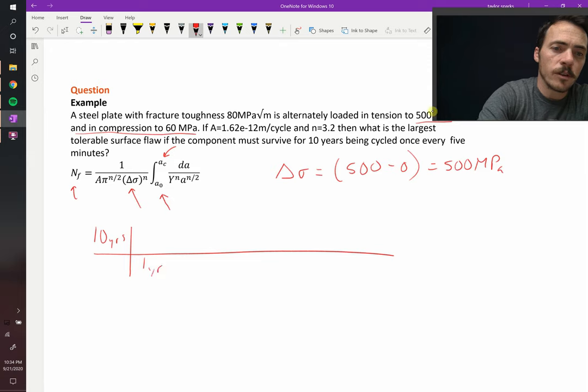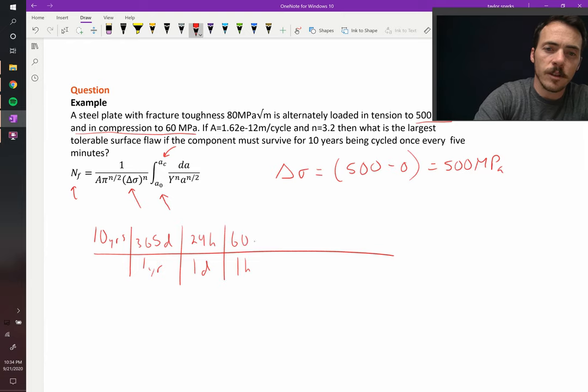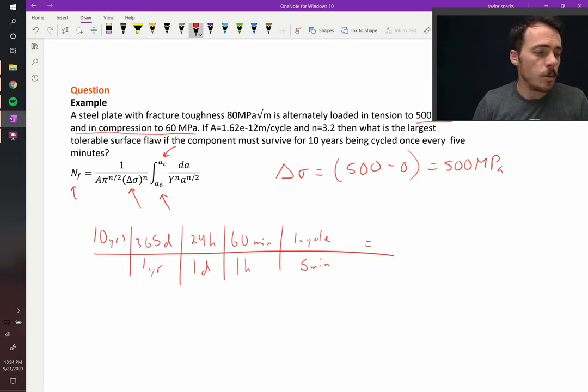So in one year there are 365 days, in one day there are 24 hours, in one hour there are 60 minutes, and it's being cycled one cycle every five minutes. So when we plug all of that in, we find that the total number of cycles that it has to withstand is 1.05 times 10 to the sixth, so about a million cycles, a million fifty thousand cycles.